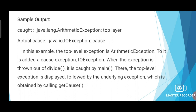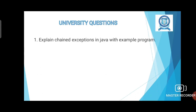This is the structure of chained exceptions. With chained exceptions, we have the facility to mention an exception along with its root cause exception. That's all about chained exceptions. A possible university exam question is: explain chained exceptions in Java with an example program.